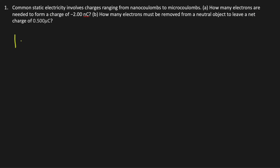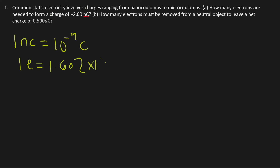1 nanocoulomb is equal to 10 to the negative 9th power coulombs, and 1 electron is equal to 1.602 times 10 to the negative 19th power coulombs. To solve part A, you need to convert nanocoulombs to coulombs and then convert coulombs to number of electrons.